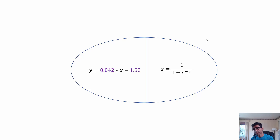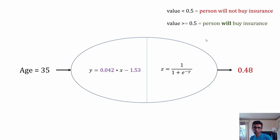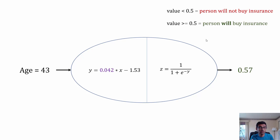With this two-step function, we have logistic regression. For example, give age 35 as input: step one computes y = 0.042(35) - 1.53 and step two applies sigmoid, giving 0.48. Since 0.48 is less than 0.5, the person will not buy insurance — hence the red color. For age 43, you get 0.57, which is greater than 0.5, meaning the person will buy insurance.